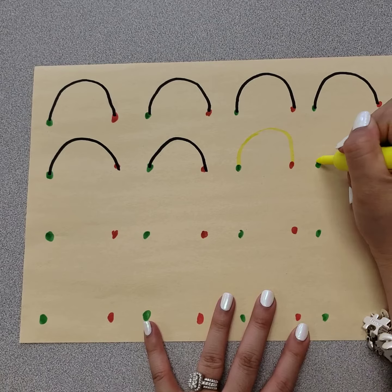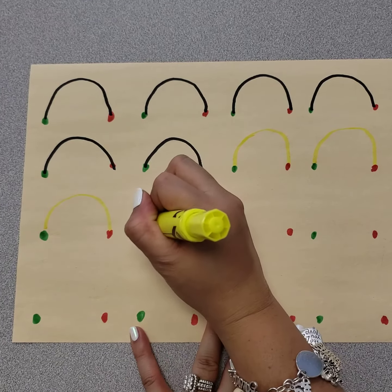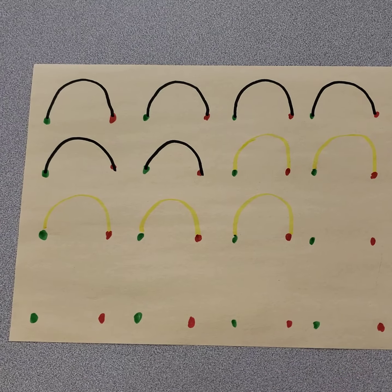So you can do something like this. Green, up and over, red. Green, up and over, red. So that the students can trace it when you're ready.